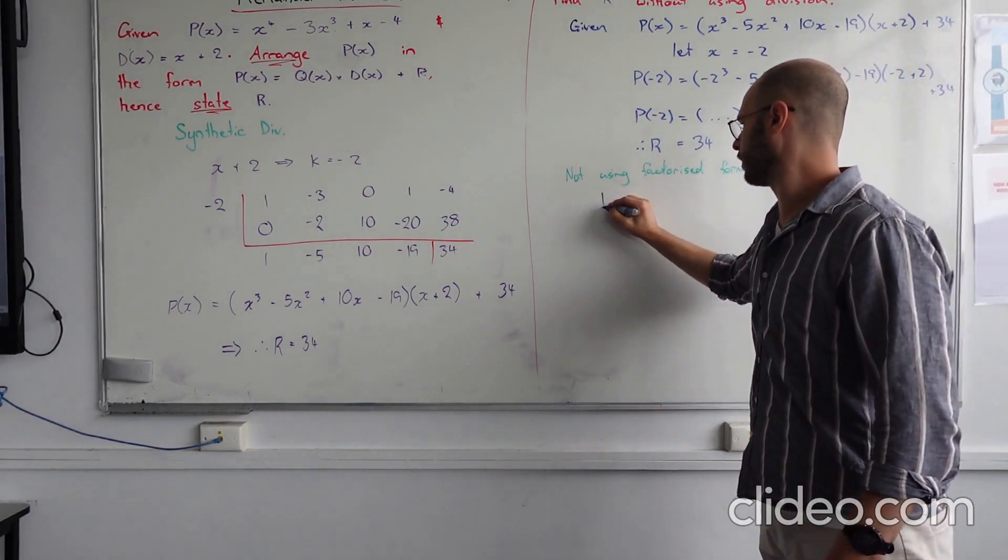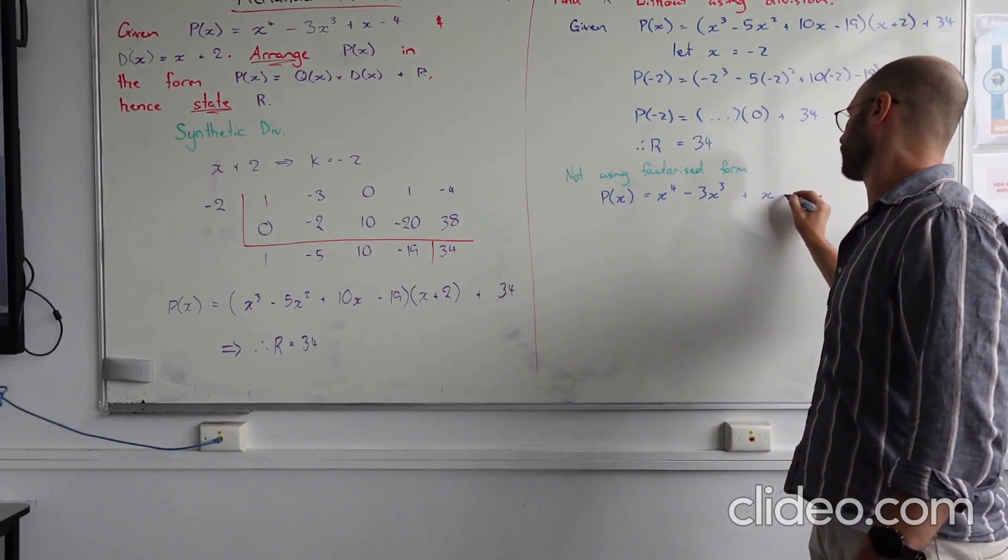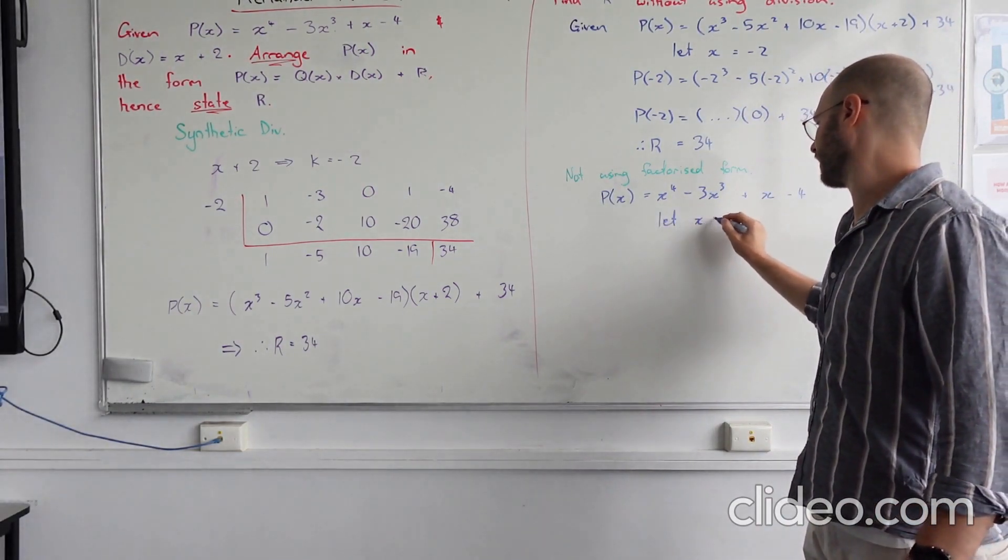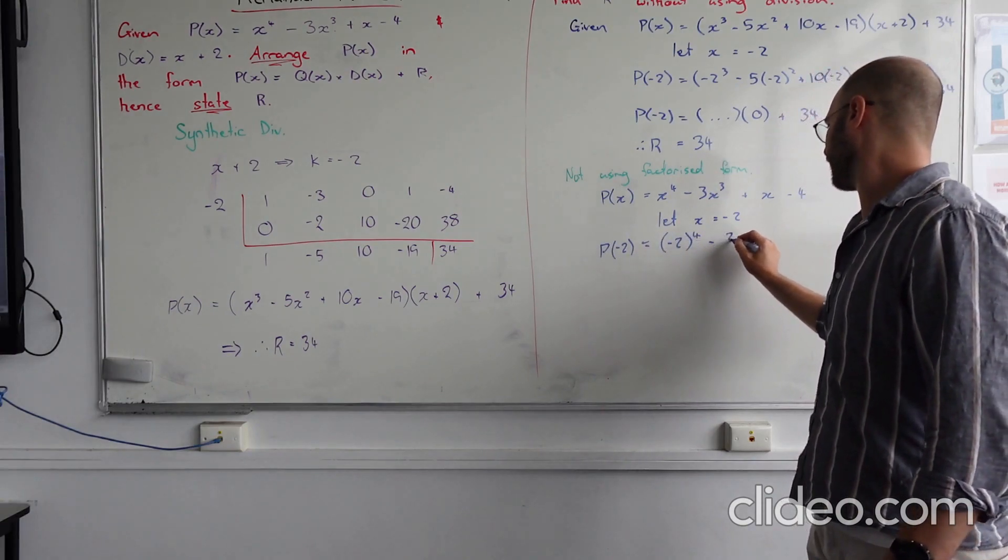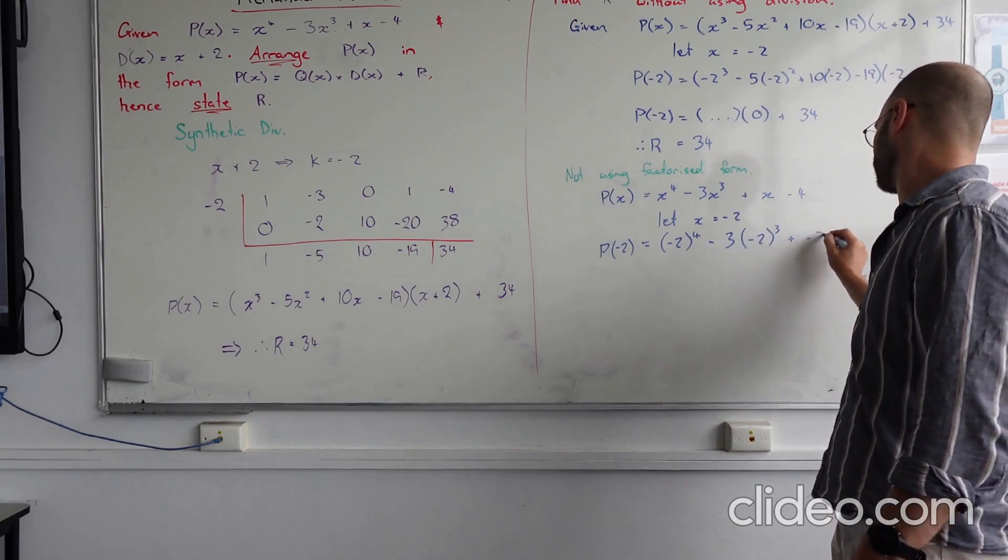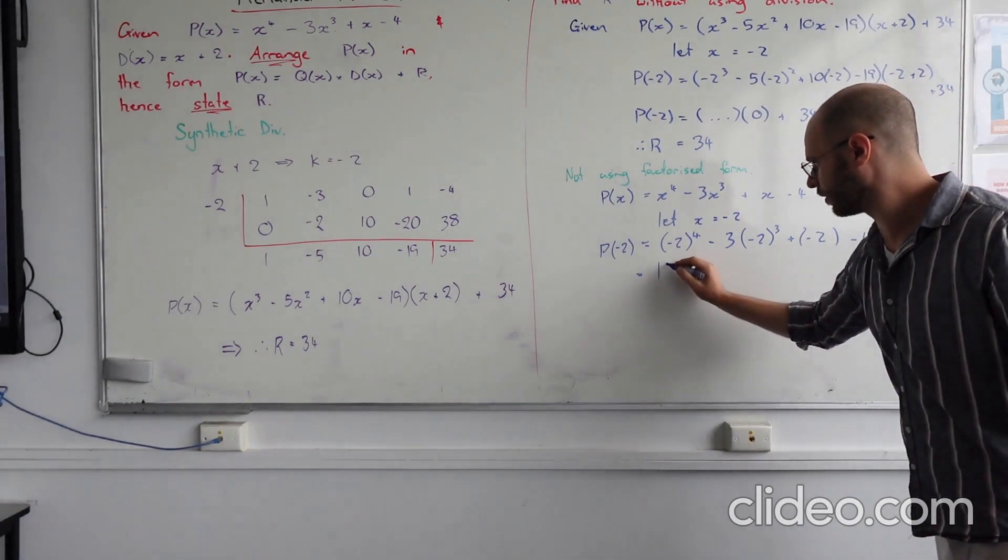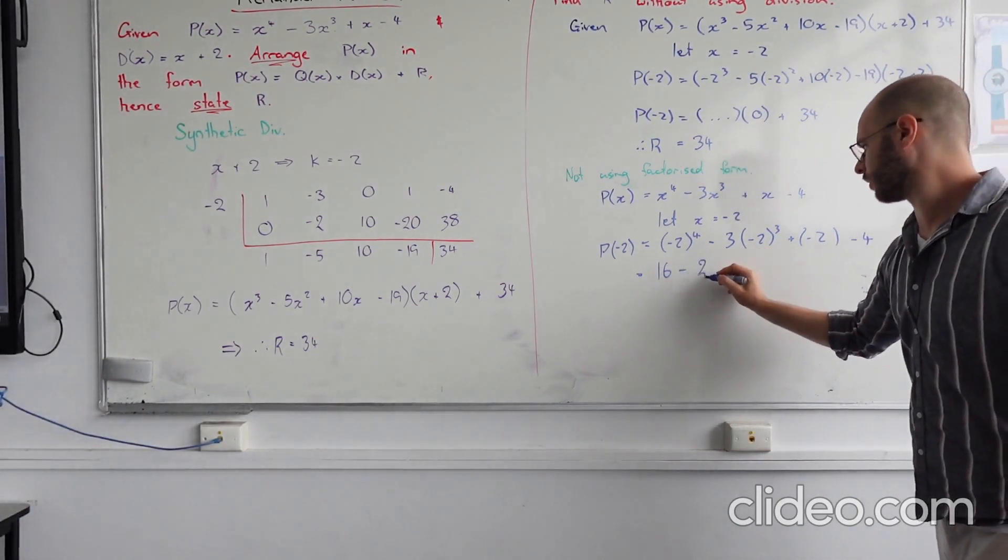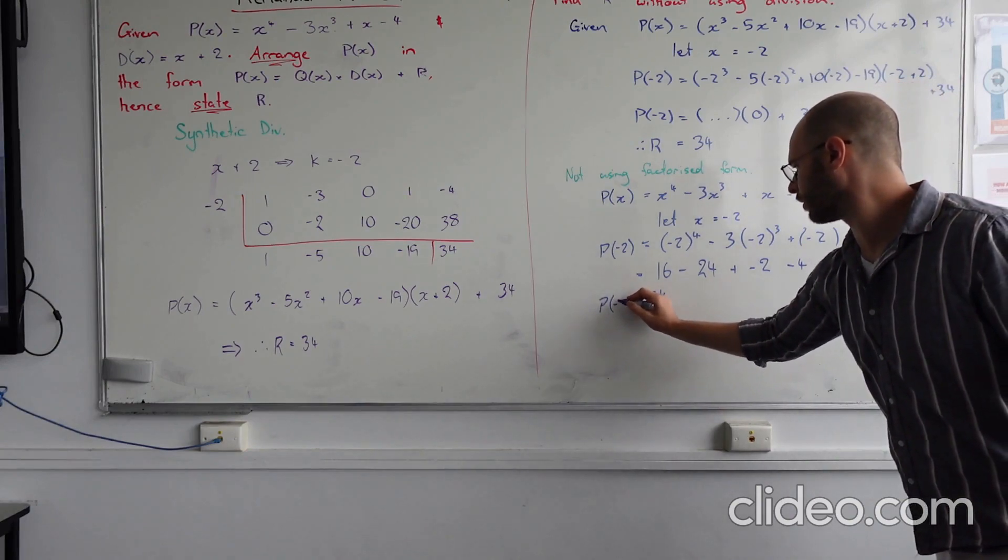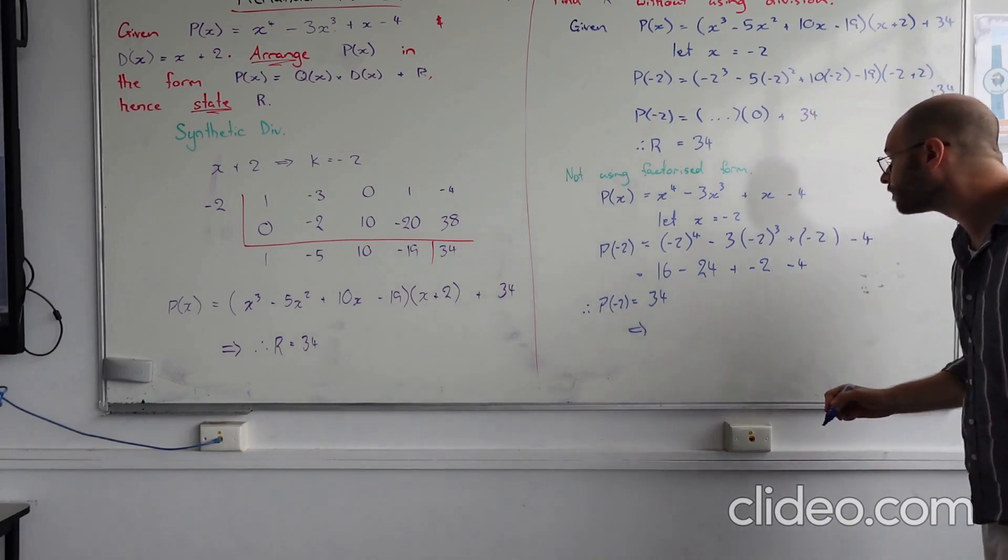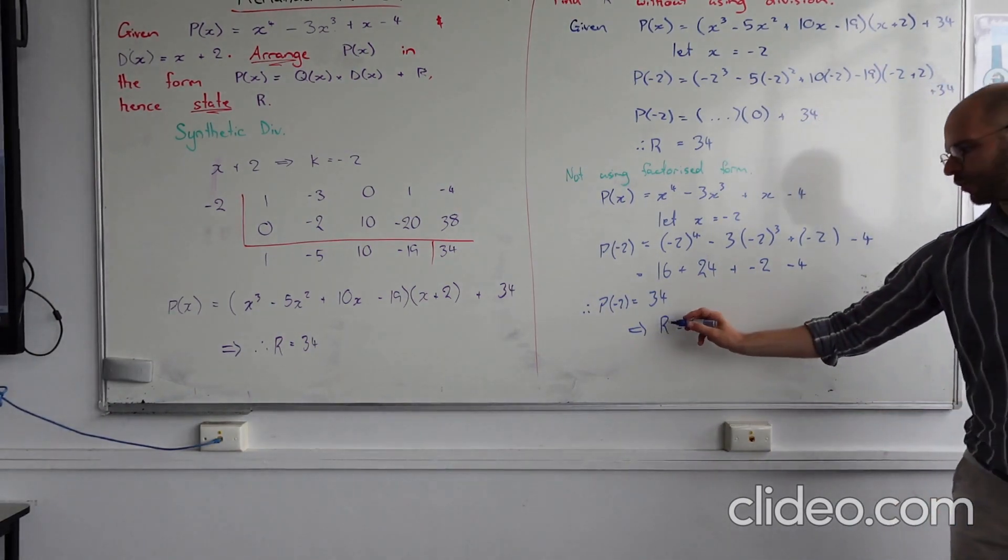We would be dealing with P of x equals x to the 4 minus 3x cubed plus x minus 4. If we say let x equal minus 2, then what we're going to find is that P of minus 2 will be minus 2 to the 4 minus 3 times minus 2 cubed plus minus 2 minus 4. Evaluating this, that's going to be 16. Minus 3 times 8 is? 24. Plus minus 2 minus 4, which is? It should be plus 24. Plus 24. Indeed. I was so excited about the answer already been known. Therefore, the remainder is going to be 34.